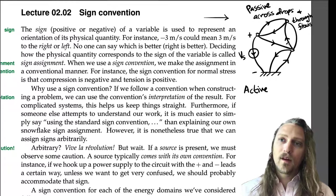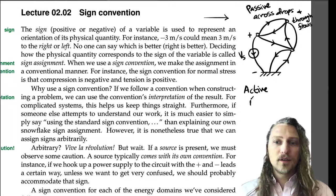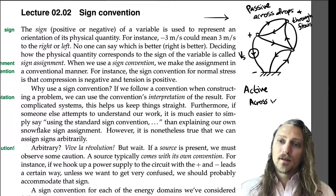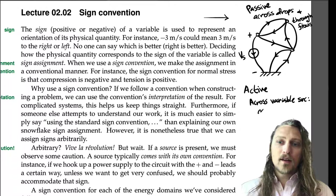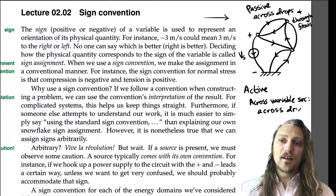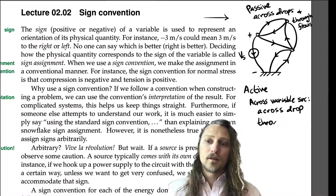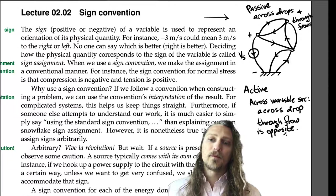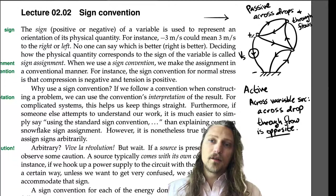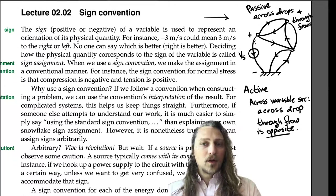So if it's an across variable source, like in our example here of voltage source, then the across drop is in the direction of the arrow, but the through flow, the through variable flow, is opposite. So that means that if we draw this arrow down, so positive negative terminals for an across variable source, then we're going to assume that the direction of the through variable is actually the other direction.